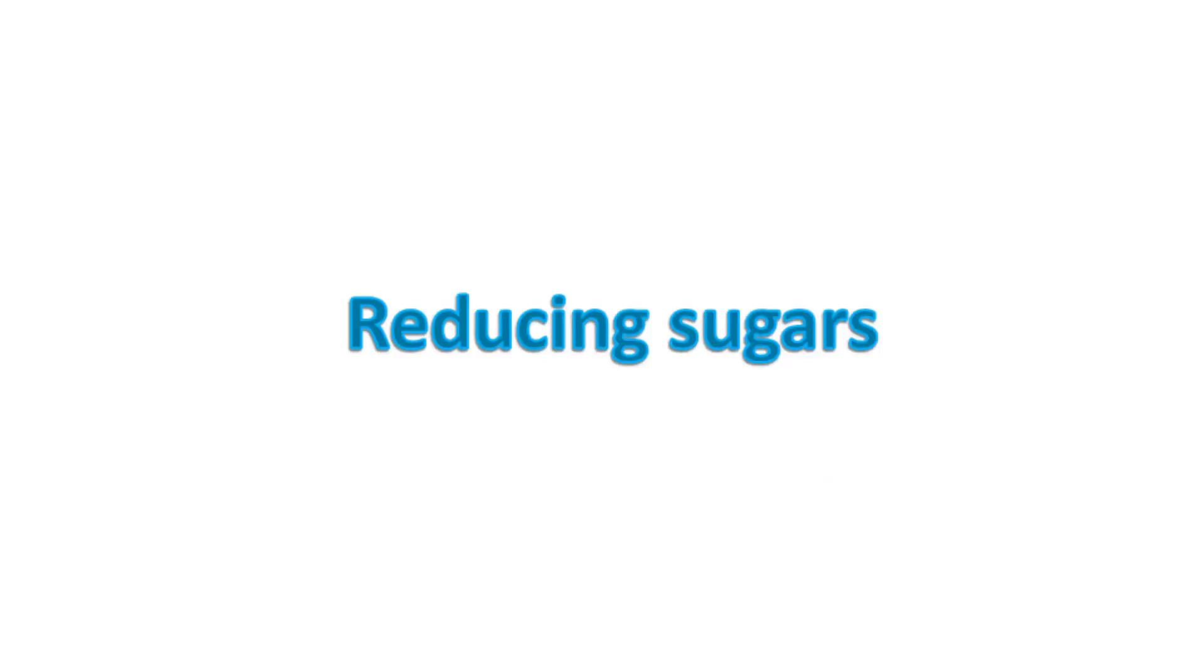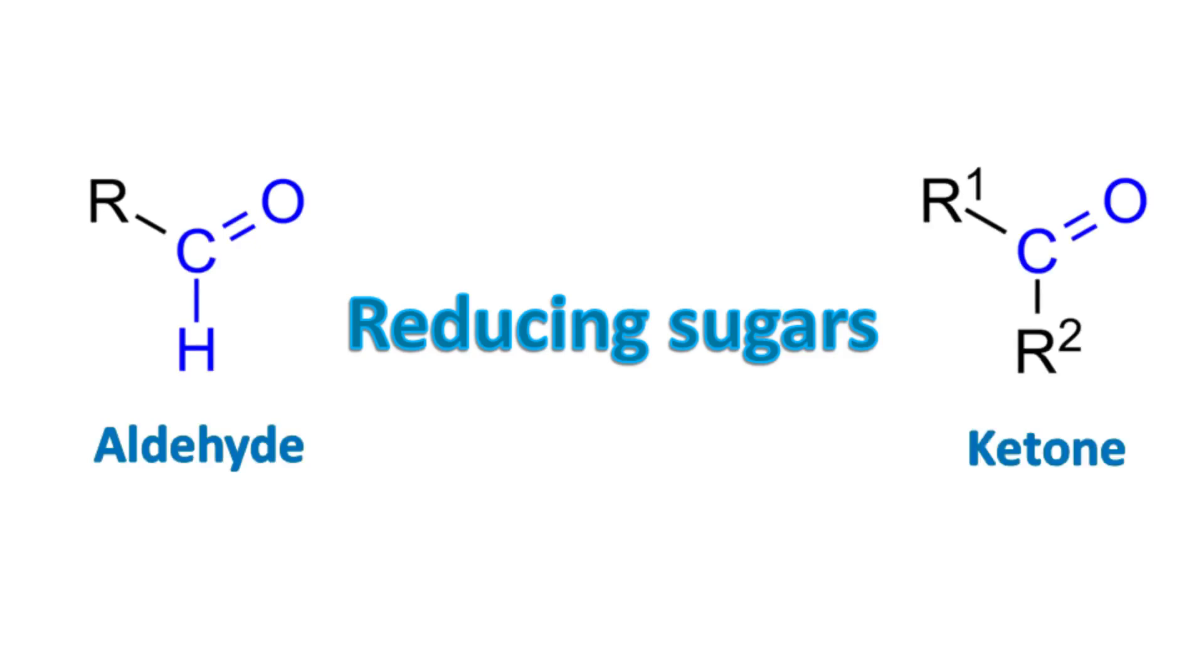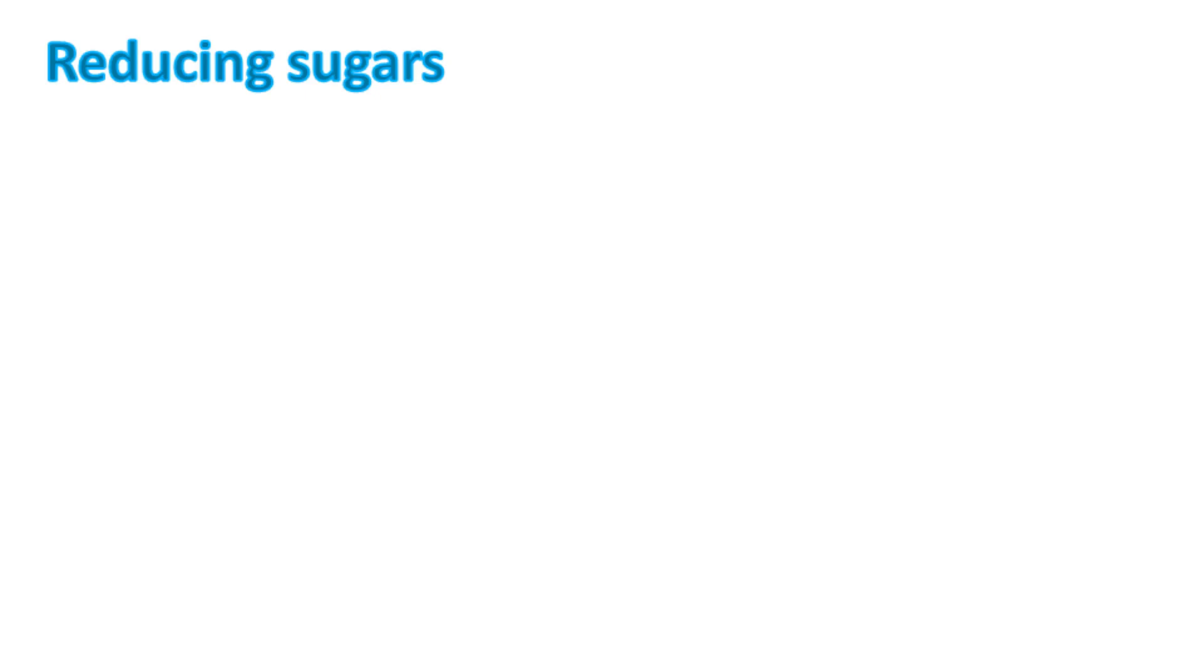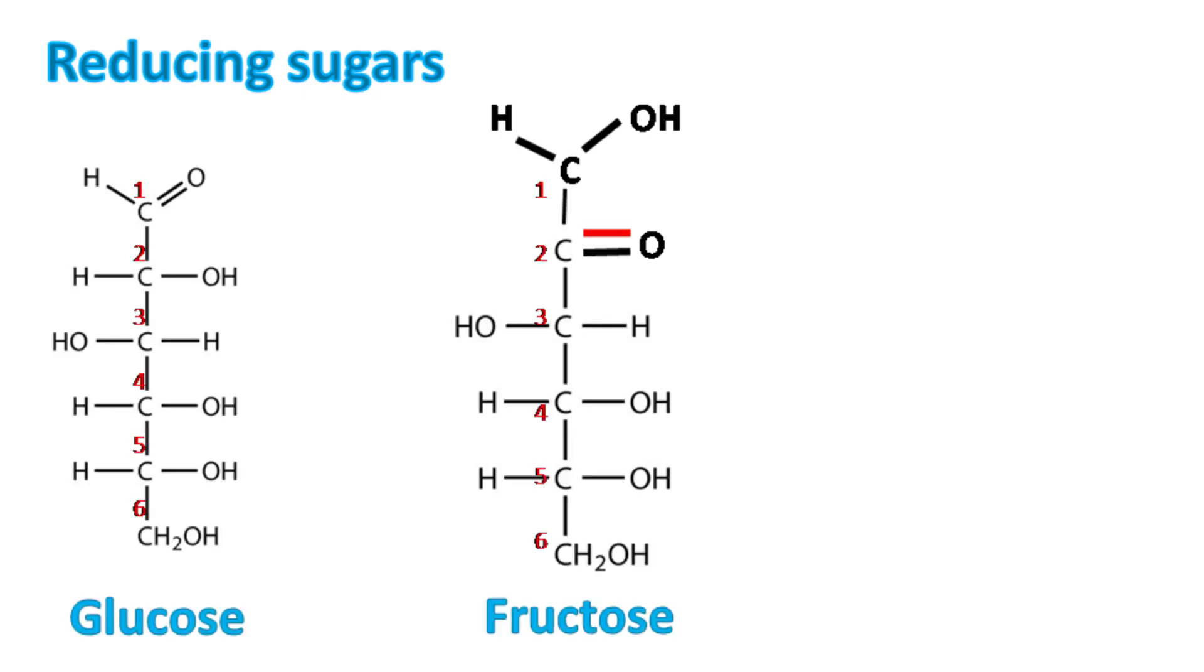Reducing sugars are the ones that have a free aldehyde or a keto group. For example, glucose and fructose are reducing sugars. Glucose has a free aldehyde group on its first carbon while fructose has a free keto group on its second carbon.